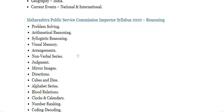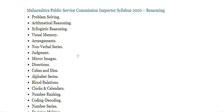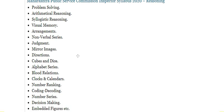The second section is Reasoning. In the Reasoning section we have the following topics: Problem Solving, Arithmetical Reasoning, and Syllogistic Reasoning — for which one should have good knowledge of Set Theory, Boolean Algebra, and Logic. There are also Visual Memory questions, Arrangements, and different Number Series.